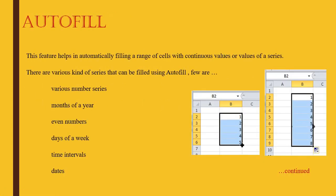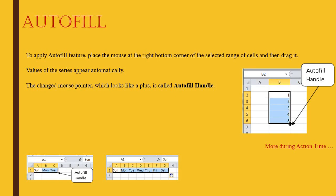Autofill is an introduction to automation — something will happen automatically. If you write a few numbers, select them, and take the mouse to the right corner, the pointer will change. Click and drag down, and automatically more numbers in the series will appear. This works for months of a year, days of a week, time intervals, or other rhythmic sequences. For example, typing Sunday, Monday, Tuesday and dragging produces Wednesday, Thursday, Friday, Saturday, and you can drag further.